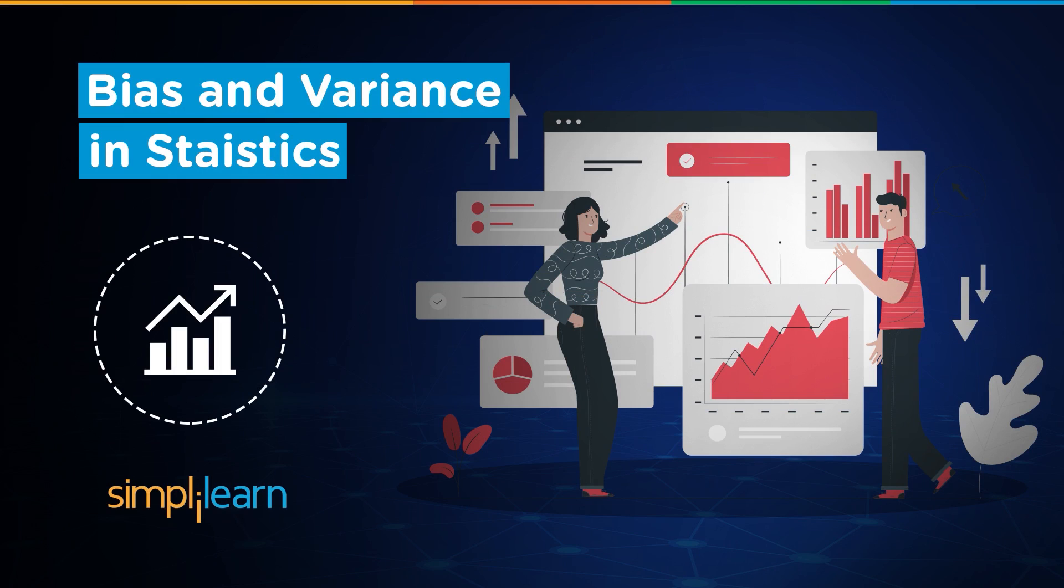Hello everyone, I welcome you all to Simply Learn. Bias and variance are an important part of statistical analysis and are used in several places such as research, machine learning, data science, data analytics, and many more. It has a wide range of applications.